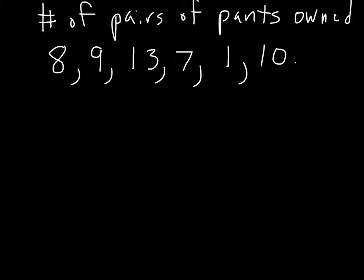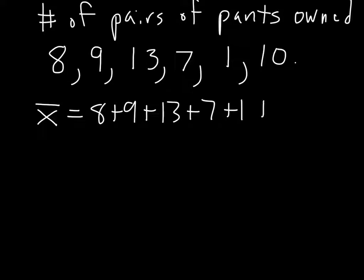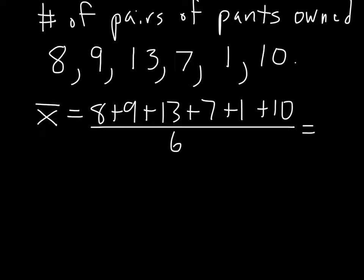You can check that the mean is just going to be the sum of these values: 8 plus 9 plus 13 plus 7 plus 1 plus 10, over 6. If you add up the top, you get 48 over 6, which simplifies to 8. So the mean is 8.